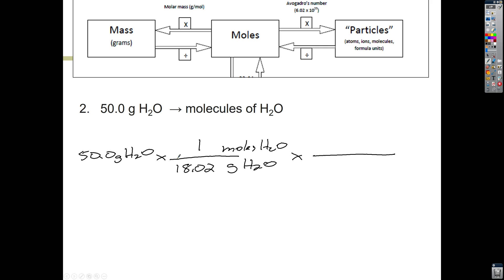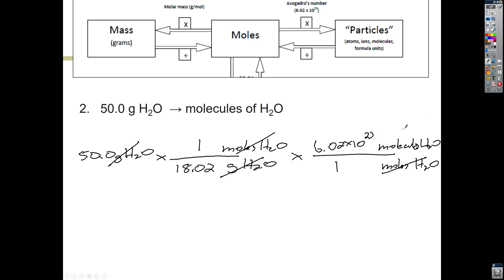Multiply, fraction bar. I'm now going from mass to moles, and I need to go from moles to how many molecules. Since I'm looking for molecules, molecules goes on top and moles goes on the bottom — that's how I know where those units go. For every one mole, it's 6.02 × 10²³ molecules. My moles of H₂O cancel out, my grams of H₂O cancel out, and I'm left with molecules of water. Plug into calculator: 50 × 1 × 6.02 × 10²³ divided by 18.02. You should get 1.67 × 10²⁴ molecules of water.